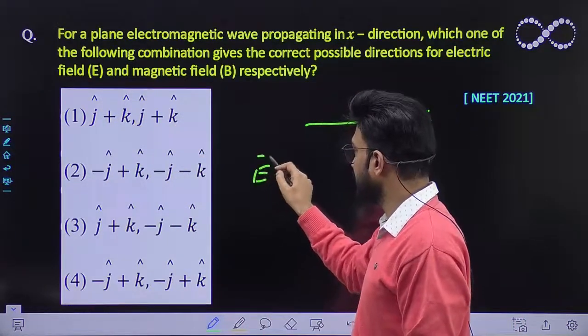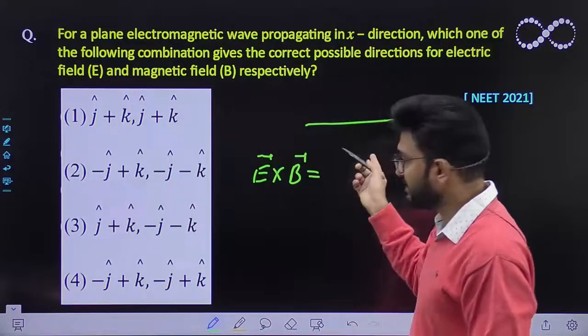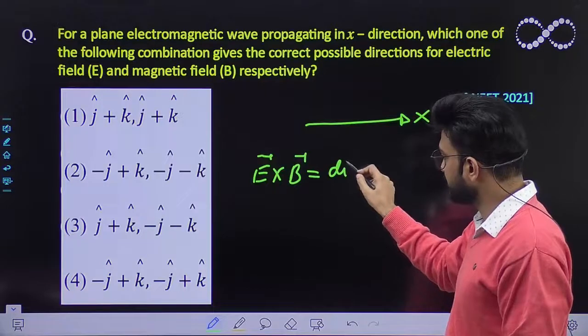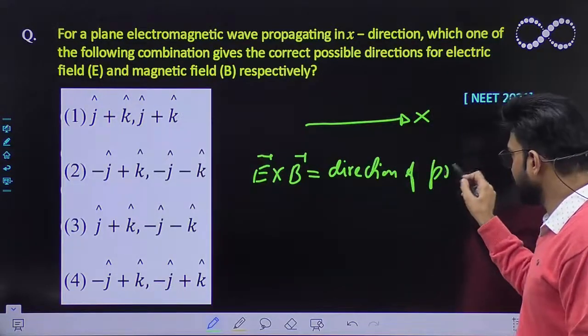We know that the cross product of electric field and magnetic field will give you the direction of propagation of the wave.